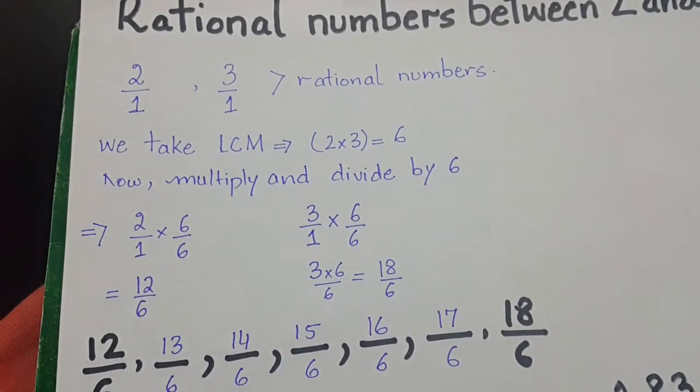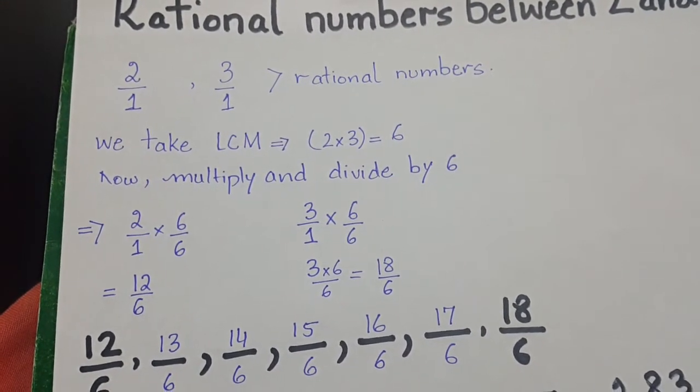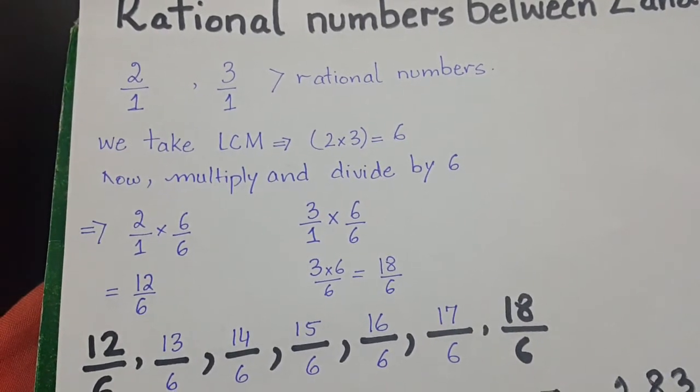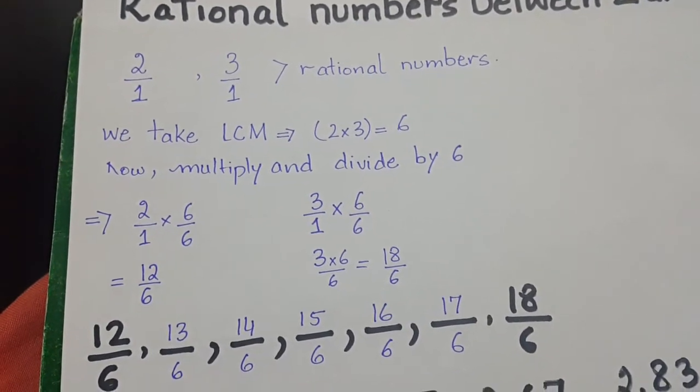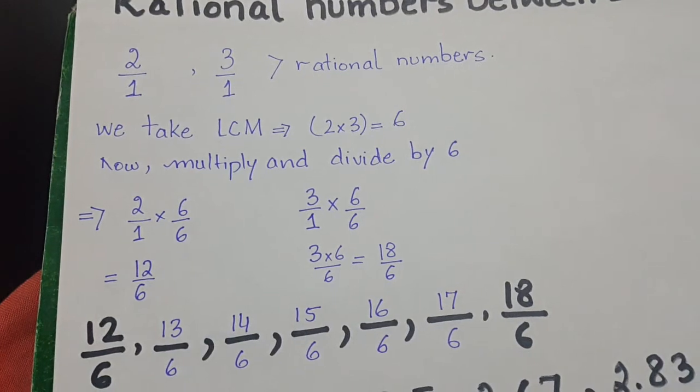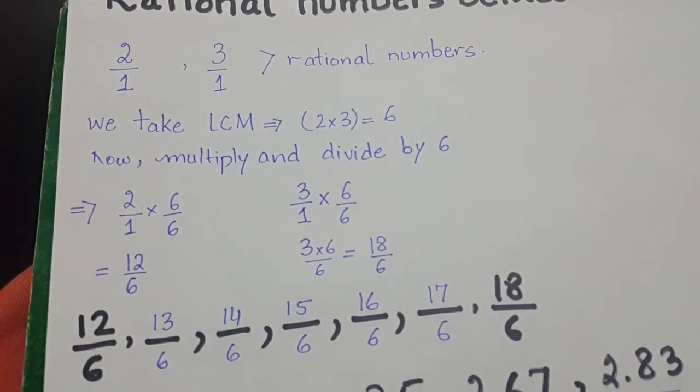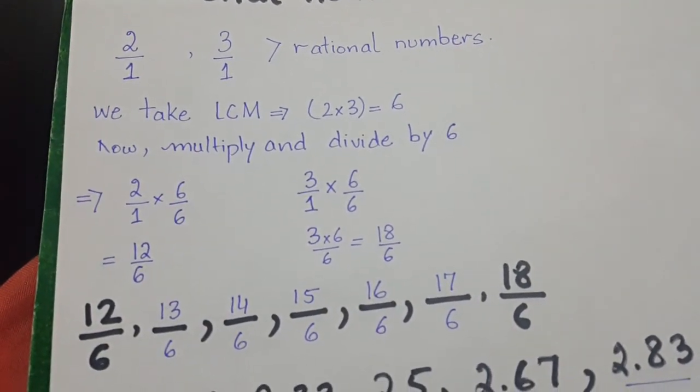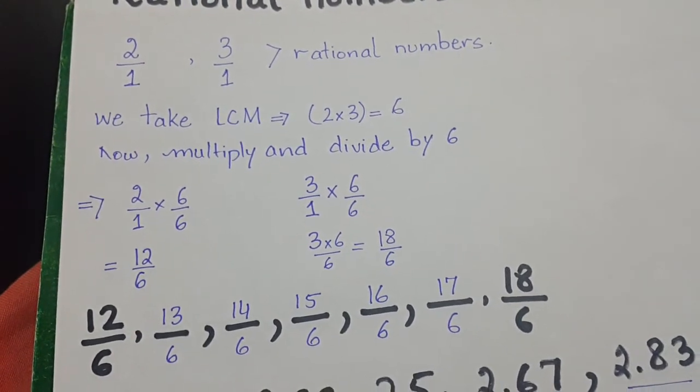We multiply 2/1 by 6/6 and 3/1 by 6/6. This will give us 12/6 and 18/6. Now we will write 5 rational numbers between 12/6 and 18/6.